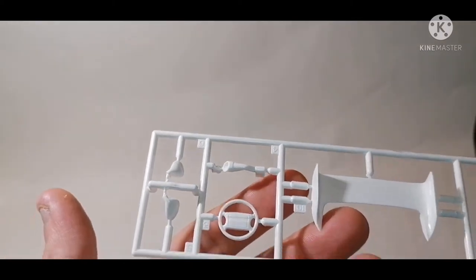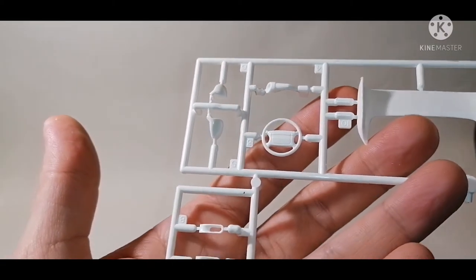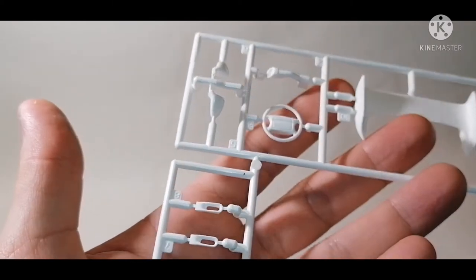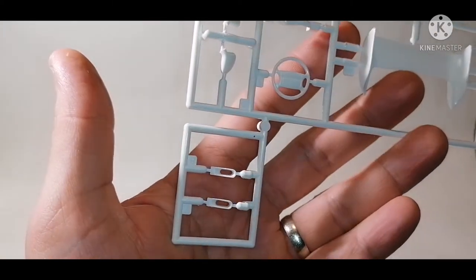That bit at the top, I'm not quite sure what it is, might be an exhaust tip, could be wrong. We'll soon see when we get around to building it. The wing mirror, steering wheel, and the air vents of the front bumper. Quite nice little additional tree there.